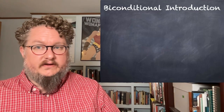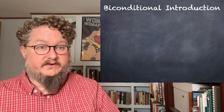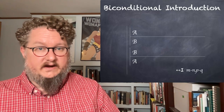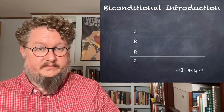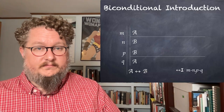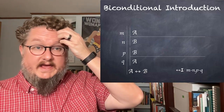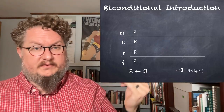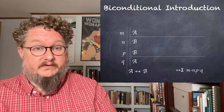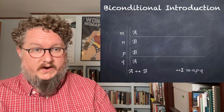Biconditional introduction is also a type of indirect proof, and it works very similarly to conditional introduction, but you have to do it in both directions. You have the sub-proof from A to B and the sub-proof from B to A, numbered M through N and P through Q. There may be many intermediate steps in these sub-proofs. Once you have those two sub-proofs, you can discharge them and introduce the biconditional.